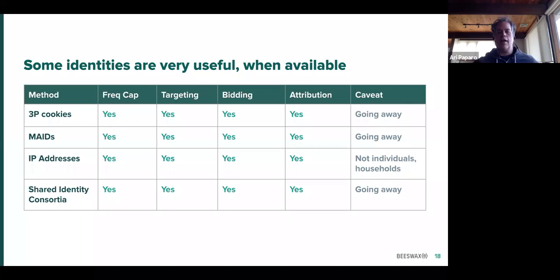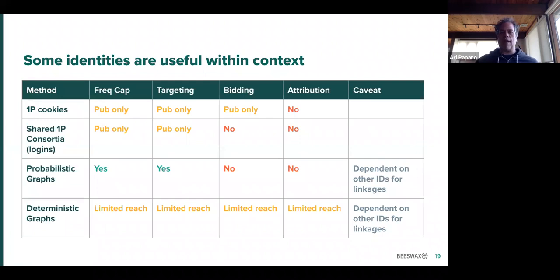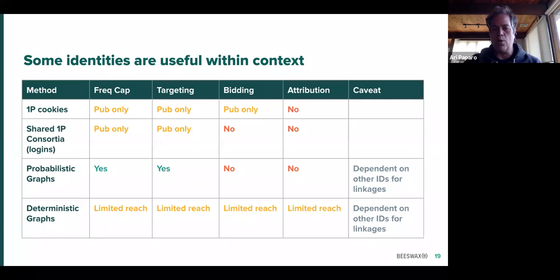Other identity sources — like first-party cookies, graphs, etc. — are useful in some contexts. For example, first-party cookies, which are publisher-side cookies, are great if you're frequency capping on a publisher site. If a publisher passes their first-party identity to their ad server and uses that for frequency capping, it works great. It just doesn't work as well when you go across publishers. Deterministic graphs work great for all four of these use cases, but they tend to have very limited reach because not all users can be identified deterministically. That's going to be the main takeaway: there are lots of forms of identity and there are lots of trade-offs for each.